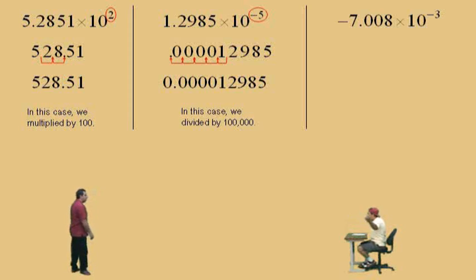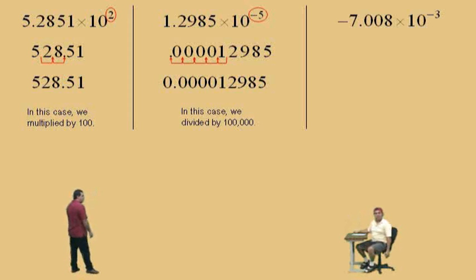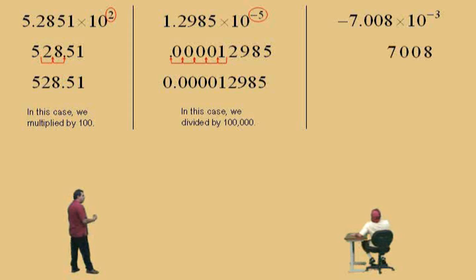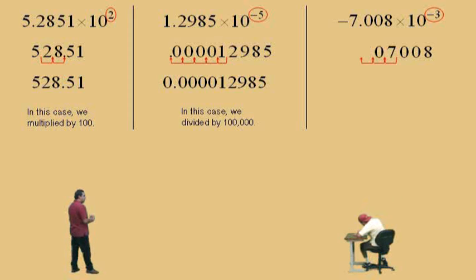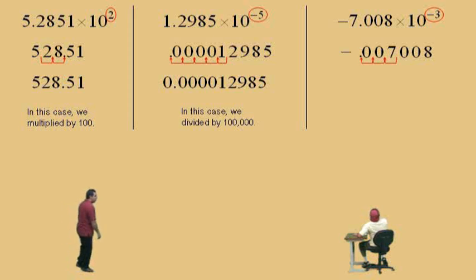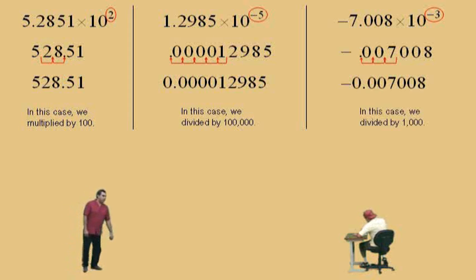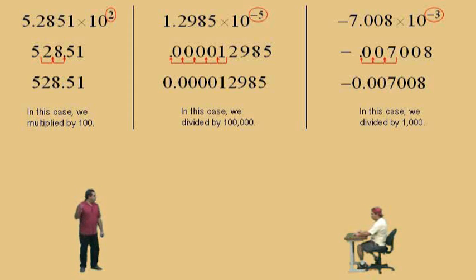Here's a negative number example: negative seven point zero eight times ten to the negative three. Move the decimal to the left three times, put your zeros in, and your answer is negative 0.00708. We divide by a thousand. We'll see you soon for part two — thank you!